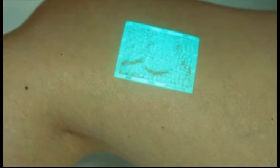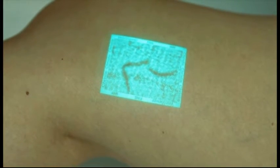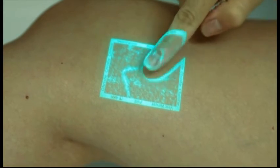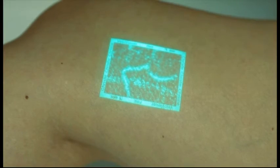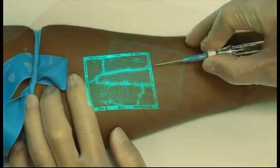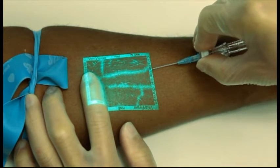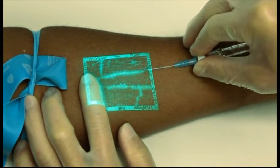The inverse mode reverses the color of the veins and the surrounding tissue inside the image window, switching from our standard dark veins on a green background to green veins on a dark background. This mode is very effective for darker skin tones and any patient where visualizing only the vein image may be of benefit.